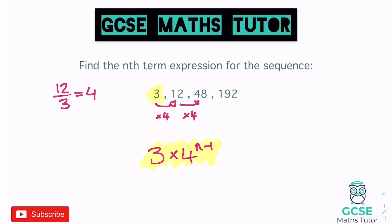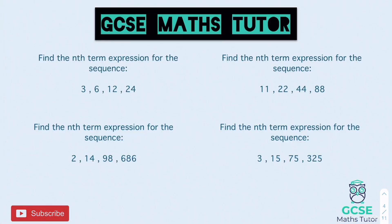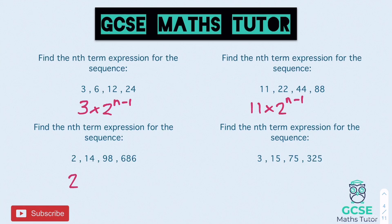Here are a few for you to have a go at. The answers: the first sequence starts with 3 and multiplies by 2, so it's 3 times 2 to the power of n minus 1. The next starts with 11, multiplying by 2, so 11 times 2 to the power of n minus 1. Then 2 multiplied by 7, giving 2 times 7 to the power of n minus 1. And the last starts at 3 going to 15 — times by 5 — so 3 times 5 to the power of n minus 1.